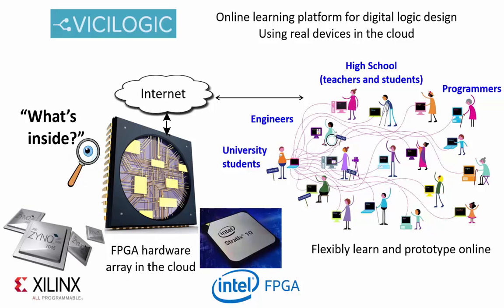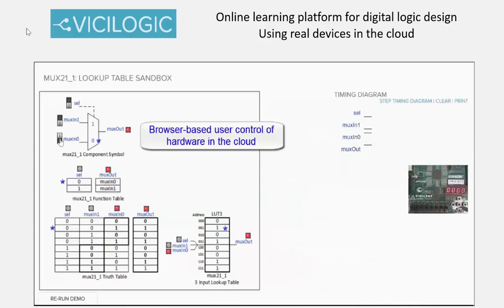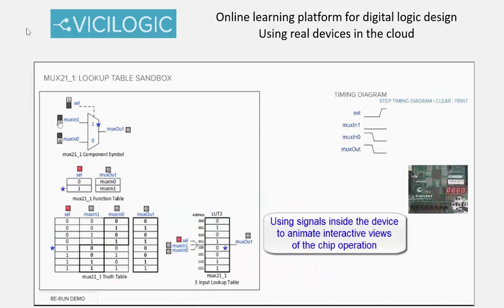ViciLogic uses a scalable array of reconfigurable ICs called field programmable gate arrays. Select the course and lesson, connect to real hardware, and interact through control and visualization widgets with component drawing, truth table, timing diagrams, etc. in the browser.